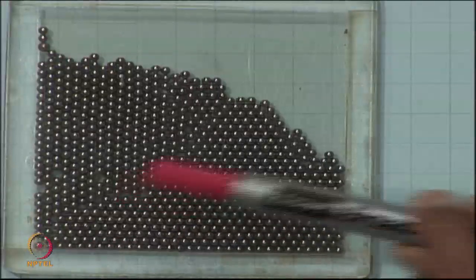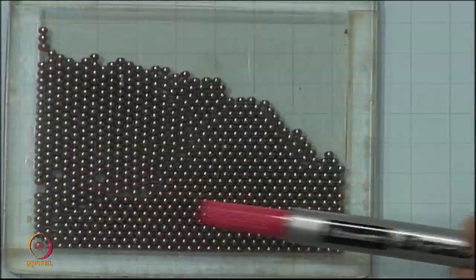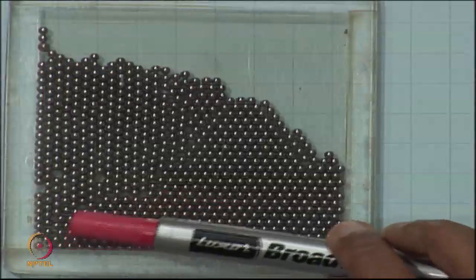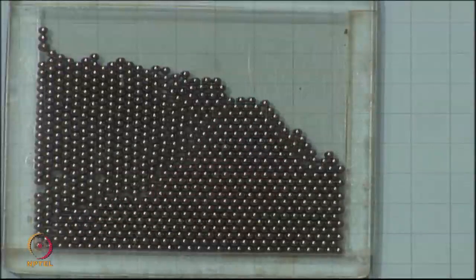Because there is an orientation difference between this and this, they cannot match perfectly in between. So you have a grain boundary.